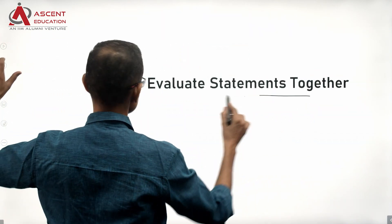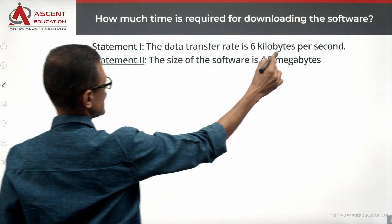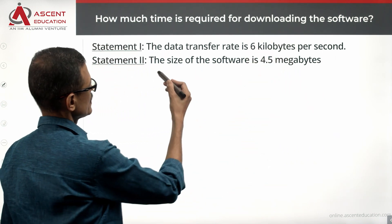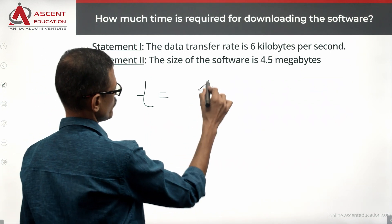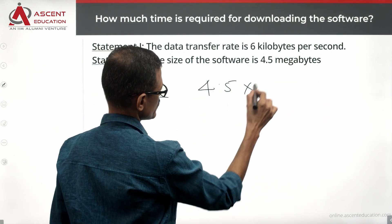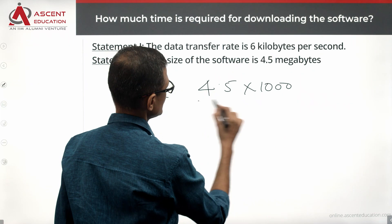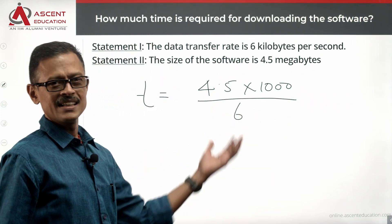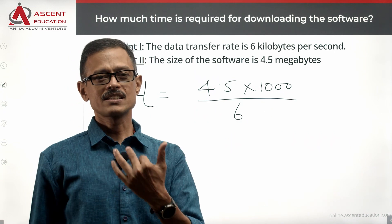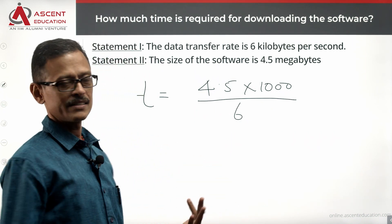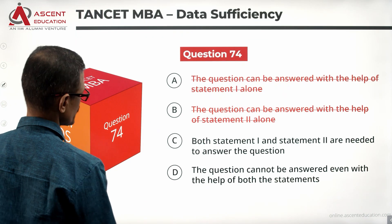Combine the two, let's see whether it makes sense. Rate of transfer is 6 kilobytes, size of the software is 4.5 megabytes. So time taken is equal to 4.5 megabytes, since it's in kilobytes it is going to be multiplied by a thousand divided by 6. The answer is going to be a unique value, so that's sufficient for us to find out. The statements together are sufficient.